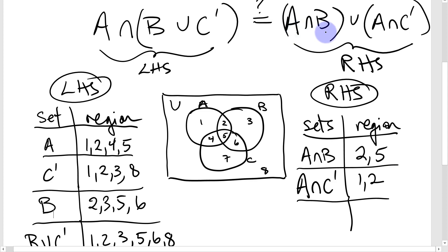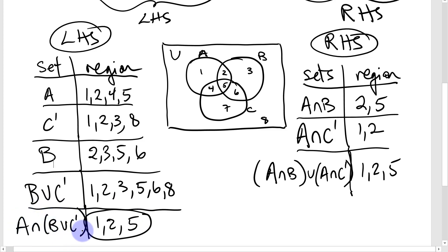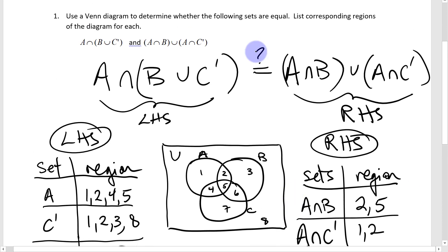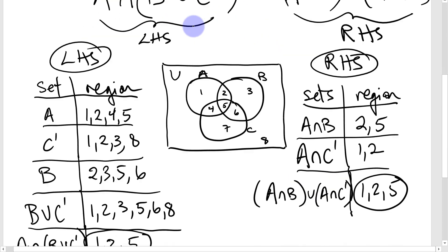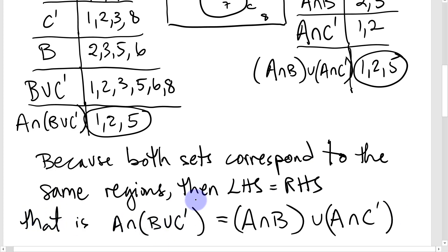Now that we have A∩B = {2, 5} and A∩C' = {1, 2}, we take their union. The union of these two sets gives regions 1, 2, and 5 — the same as the left-hand side. Both sides correspond to the same regions, so we confirm that A∩(B∪C') equals (A∩B)∪(A∩C'). They are equal.